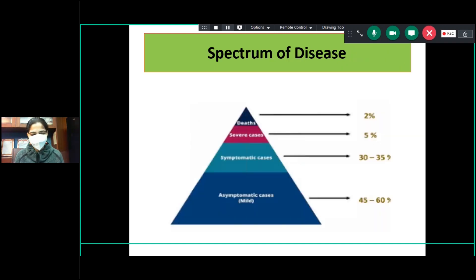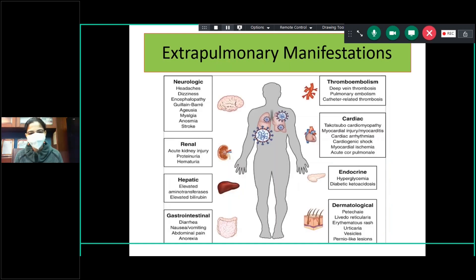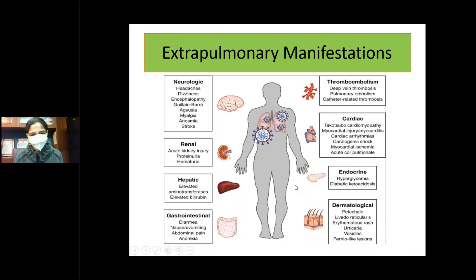The spectrum of disease is wide — most people are asymptomatic, and only around four to five percent develop severe cases or mortality. Extra-pulmonary manifestations can involve multiple systems including neurological, renal, hepatic, gastrointestinal, thromboembolic, cardiac, endocrine, and dermatological systems.